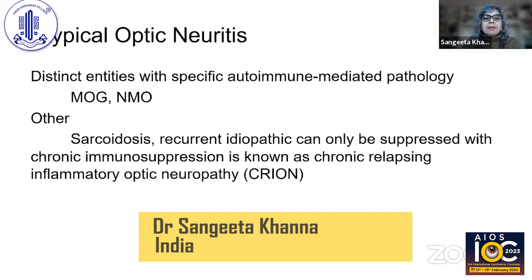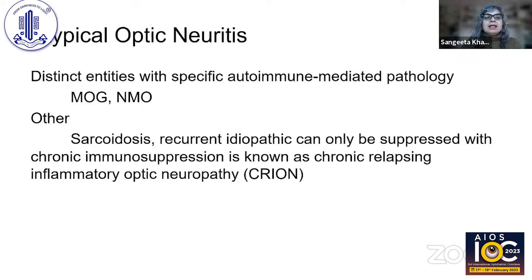Atypical optic neuritis is different because it's associated with specific autoimmune-mediated pathology. It's important to know about these and diagnose them promptly because the intervention is different. Other conditions such as sarcoidosis and autoimmune conditions can also cause atypical optic neuritis, though less commonly. There is also chronic relapsing inflammatory optic neuropathy, a type of optic neuritis which is steroid-dependent but has known markers.